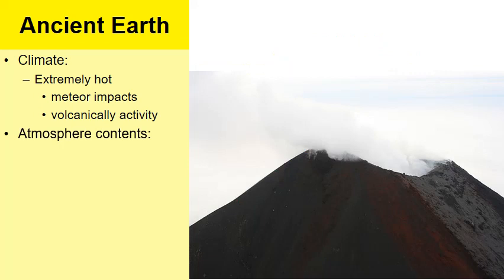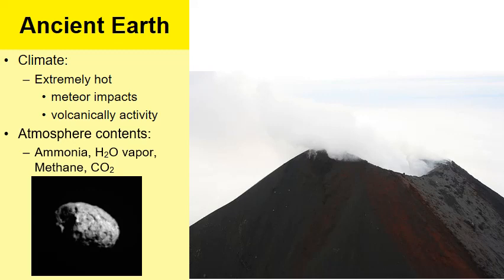When we examine ancient rocks, we can get a good idea of what the atmosphere may have contained. It's believed there was a lot of ammonia, water vapor, methane, and carbon dioxide gases in the ancient atmosphere. Many of these gases came from volcanoes — even today volcanoes spew out many of these particular gases. Another source of water was comet impacts: a comet is basically a big frozen block of ice, so when it crashes it brings water, though not all of Earth's water came from comet impacts.